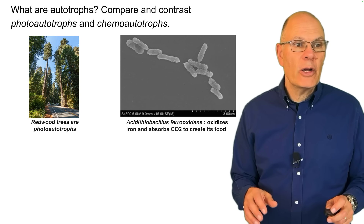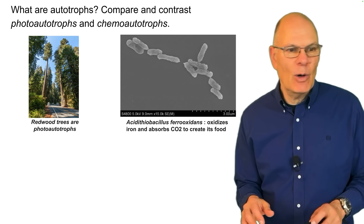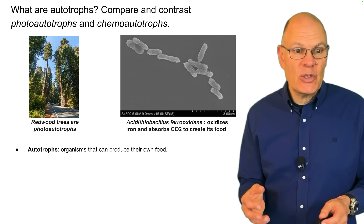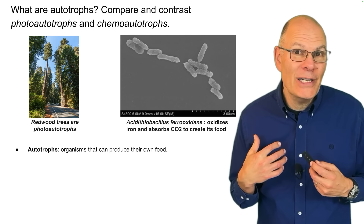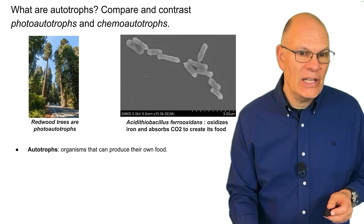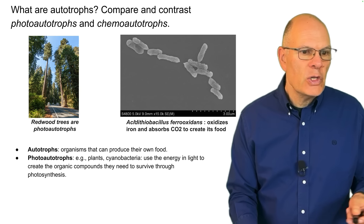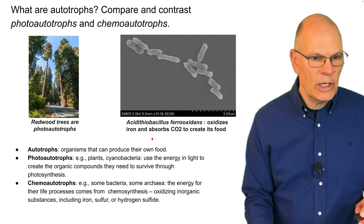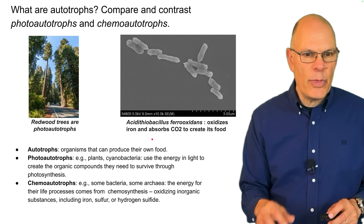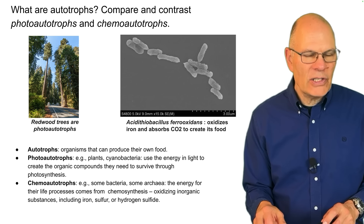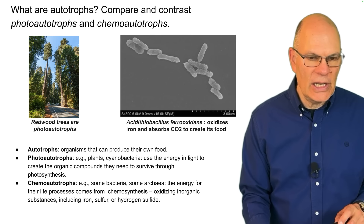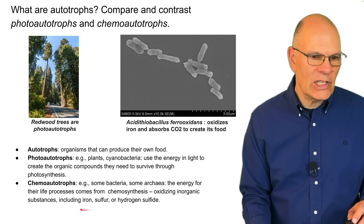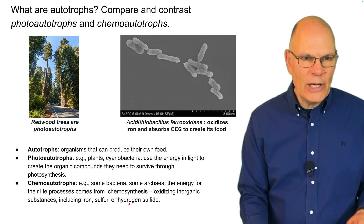What are autotrophs? Autotrophs are organisms that can produce their own food — plants and certain bacteria and archaea. Photoautotrophs, including plants and cyanobacteria, use light energy to create organic compounds through photosynthesis. Chemoautotrophs include some bacteria and archaea — a third domain of life — and the energy for their life processes comes from chemosynthesis, which involves oxidizing inorganic substances including iron, sulfur, or hydrogen sulfide.